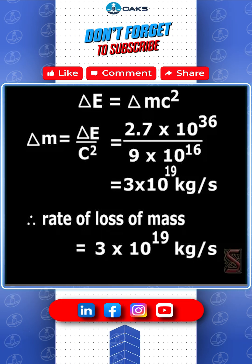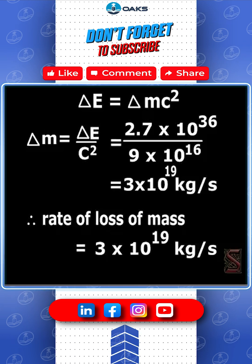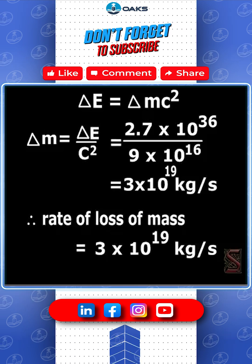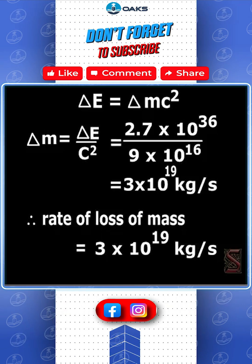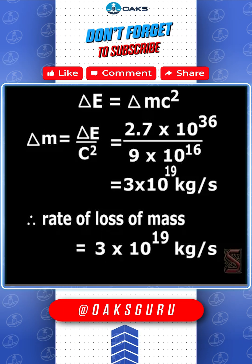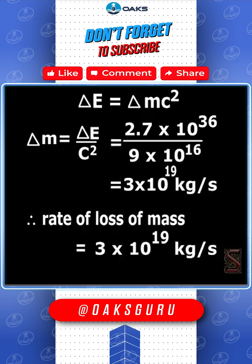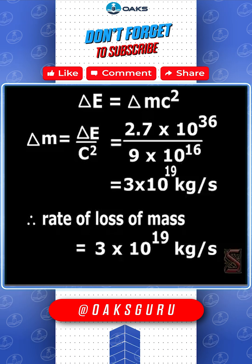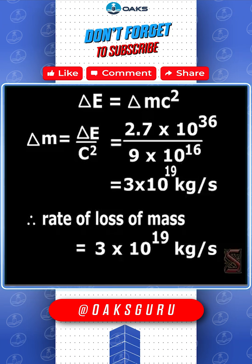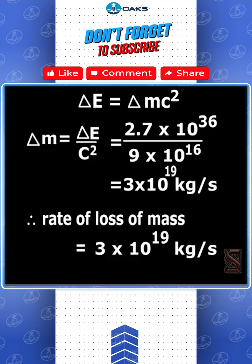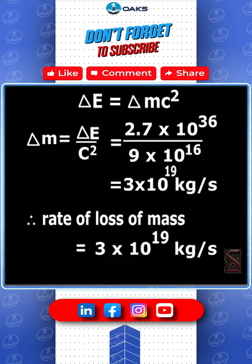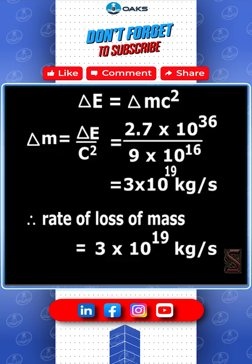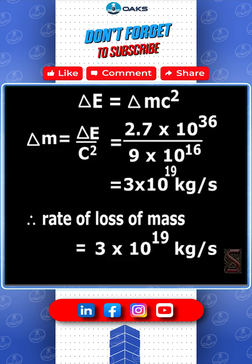On substituting the values, this is equal to 3 into 10 to the power of 19 kg per second. So the rate of loss of mass is 3 into 10 to the power of 19 kg per second.